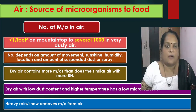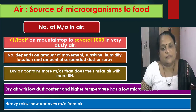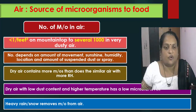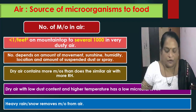The number of microorganisms in the air depends on the amount of movement, sunshine, humidity, location and amount of suspended dust or spray. Dry air usually contains more microorganisms than humid air. However, if the dry air has low dust content and high temperature, then the microbial level is low. Heavy rain or snow removes microorganisms from the air.